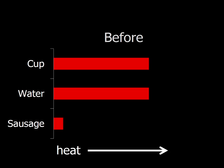So when we're doing our calculations, we're going to make an assumption that heat lost equals heat gained. So let's say we have this graph. This is the before situation before the heat gets transferred to the sausage. The cup and the water have more heat than the sausage. We mix them together.